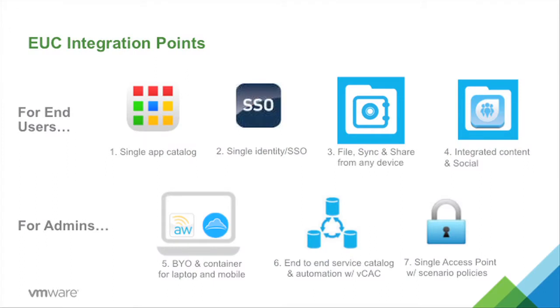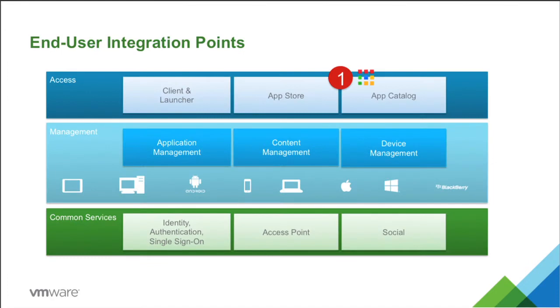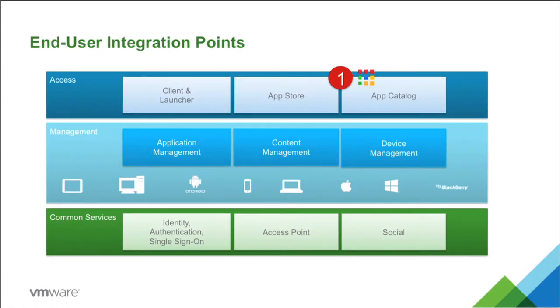So that's what we want to do. We've identified seven key integration points to make this architecture a reality. For end users, there are four key integration points: first, a common application catalog and app store; second, single identity and single sign-on; third, unifying data and files across all device types; and fourth, embedding social into everything a user does.